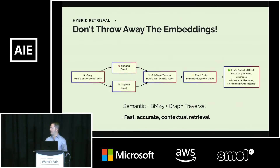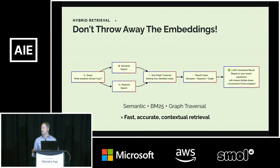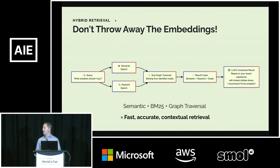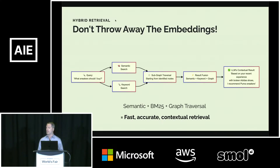Graphiti doesn't abandon embeddings — they're still incredibly useful. Graphiti uses semantic search and BM25 full-text retrieval to identify sub-graphs within the broader Graphiti graph. These can be traversed using graph traversal techniques to develop a richer understanding of memory, finding adjacent facts that might fill out the agent's understanding. The results are then fused together, offering a very fast and accurate retrieval approach. Graphiti has a number of different search recipes built in, so you can really explore different approaches to retrieving data for your particular agent.